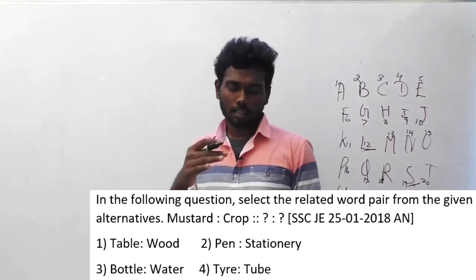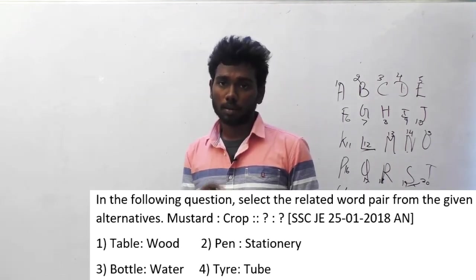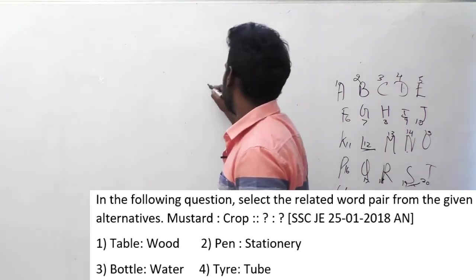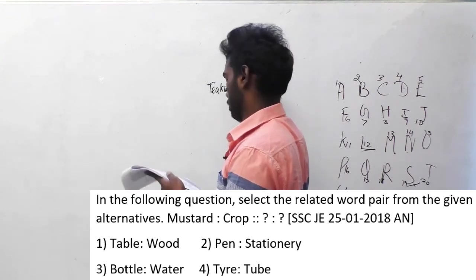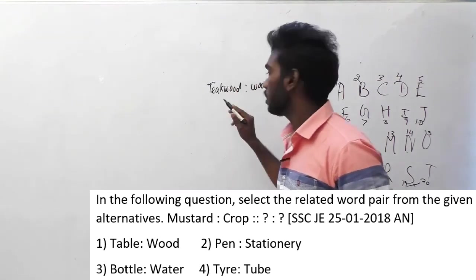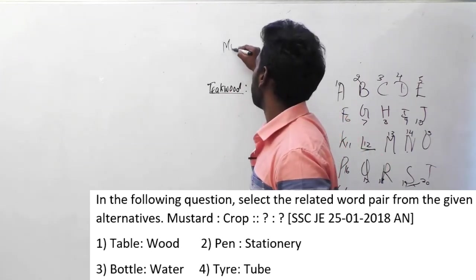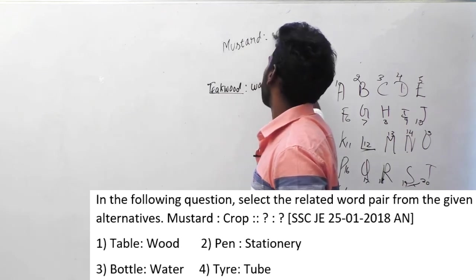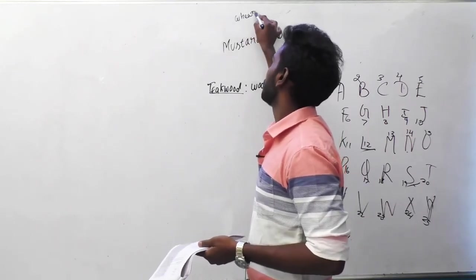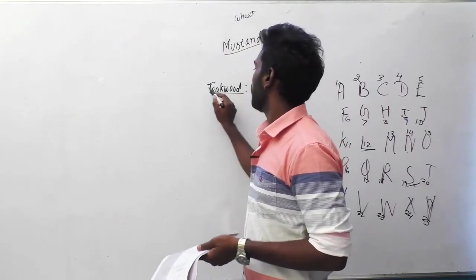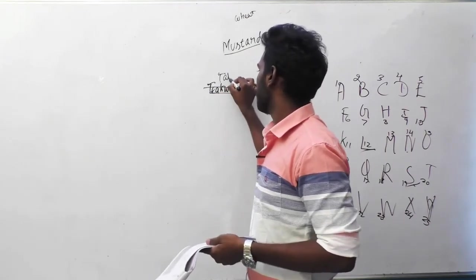Therefore, this implies the following option. Table is to wood — table is made up of wood, but table is not a wood. If they had given teak wood is to wood, that might have been correct, because teak wood is a type of wood, similar to mustard being a type of crop. But it is given as table, not teak wood, so it is not the right answer.